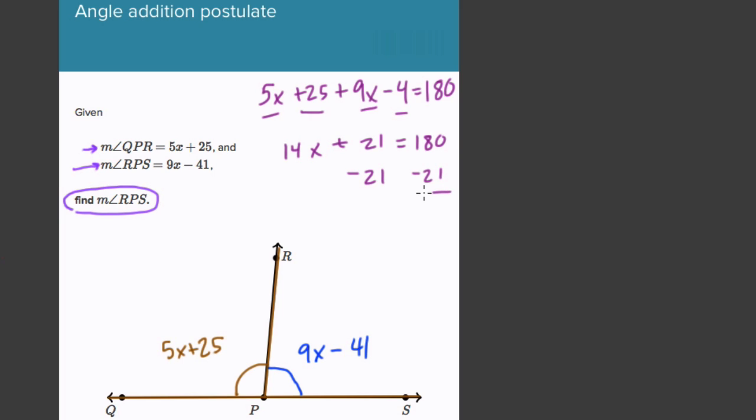So subtract 21 from both sides. And we get here 159, so 14x equals 159. So what is that? Well, I believe what we're going to get here is 12. We can test it. So 14 times 10 is 140.